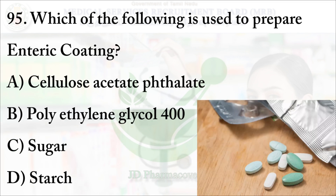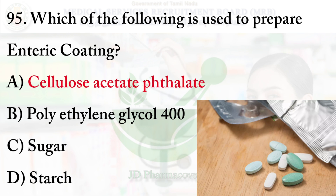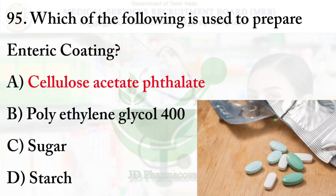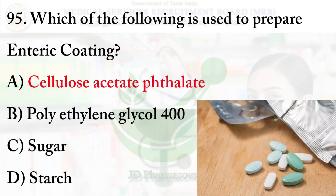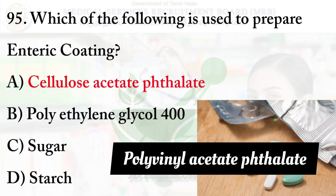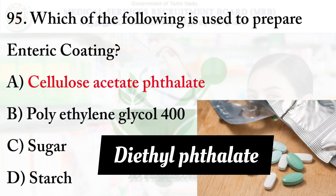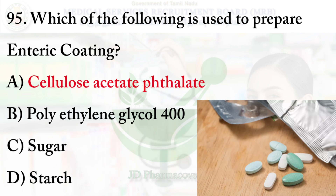Question number 95: which of the following is used to prepare enteric coating? Options: option A — cellulose acetate phthalate, option B — polyethylene glycol 400, option C — sugar, option D — starch. The right option is option A: cellulose acetate phthalate. Other materials used include hydroxypropyl methylcellulose phthalate, polyvinyl acetate phthalate, diethyl phthalate, and cellulose acetate phthalate for making enteric coating tablets.